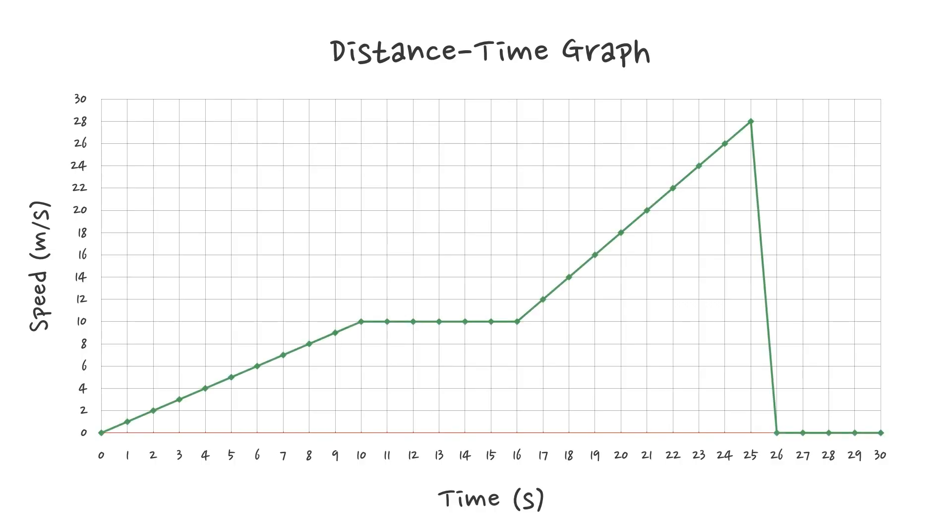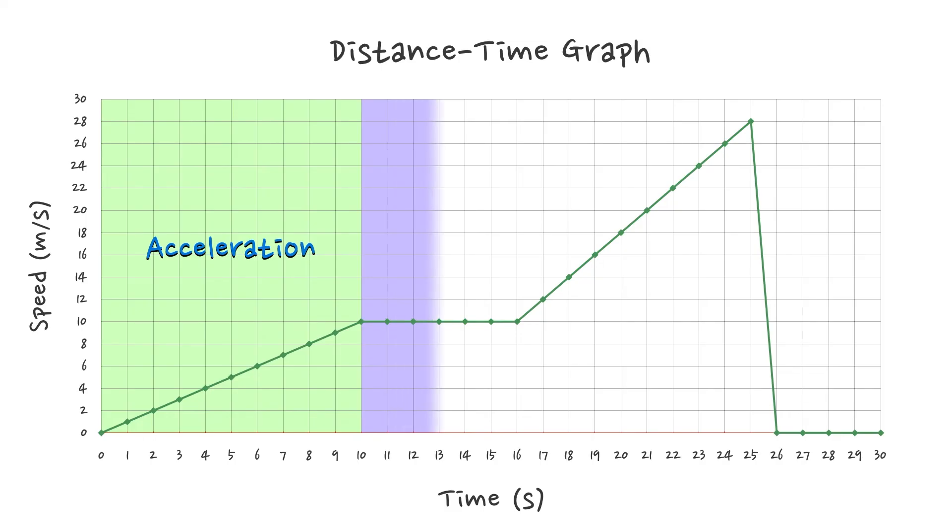In this one we can see that there is an increase to begin with. That means that the speed is increasing with time, and therefore we've got acceleration. Specifically, in this case, a positive acceleration. It's getting faster. After that, we've got a time where the line goes flat. As we can see, as time increases, the speed doesn't change. It doesn't go up and it doesn't go down. So the object is still moving at a constant speed.